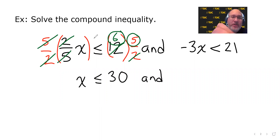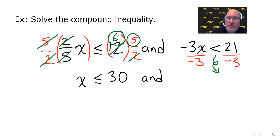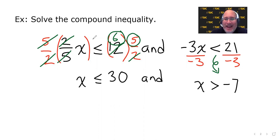On the other inequality, negative three X is less than 21. We solve it by dividing both sides by negative three. Warning: dividing both sides by a negative invokes a reversal of sign, so we get X is greater than — and 21 divided by negative three is negative seven. So our solution is X is less than or equal to 30 and X is greater than negative seven.